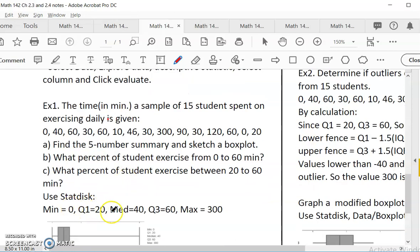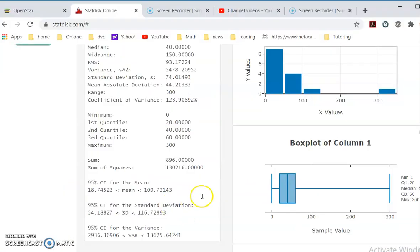Let's copy it down. Find a five number summary. So 0, 20, 40, 60, 300. Copy it over here. They actually list it here. Five number. And then they graphically have 0, 40, 60. No, 20, 40, 60 and then 300.